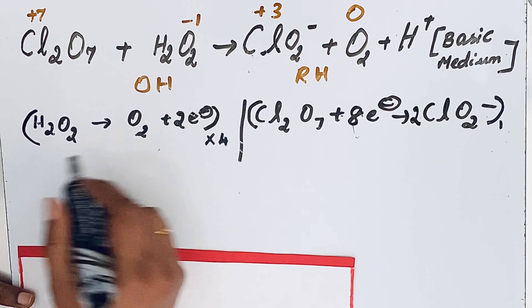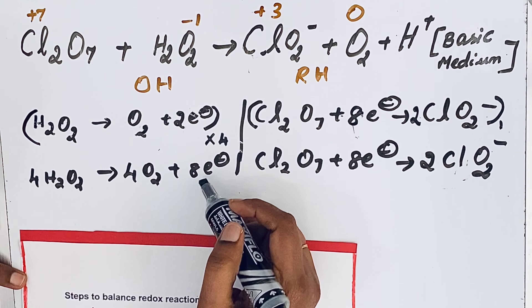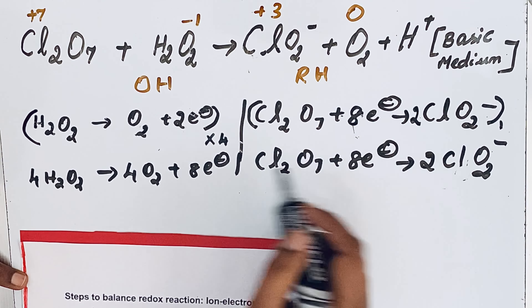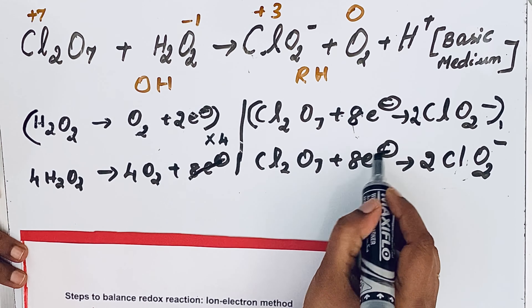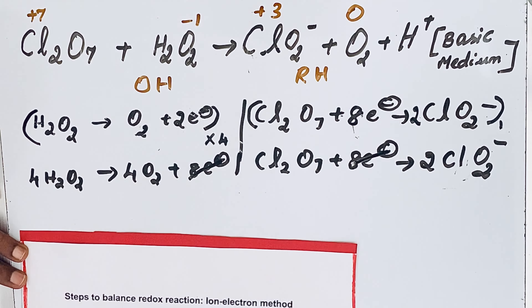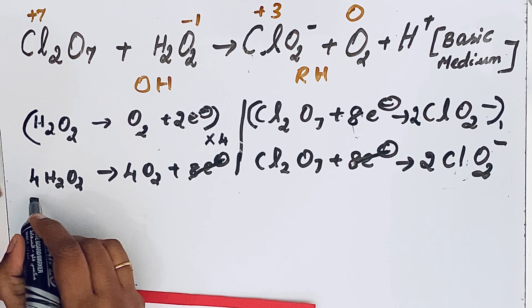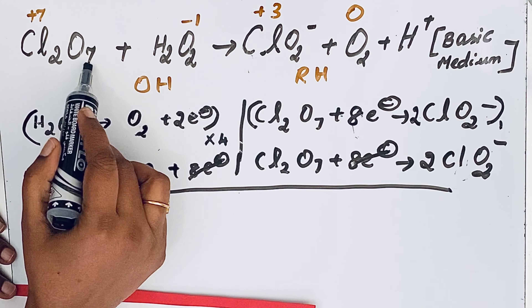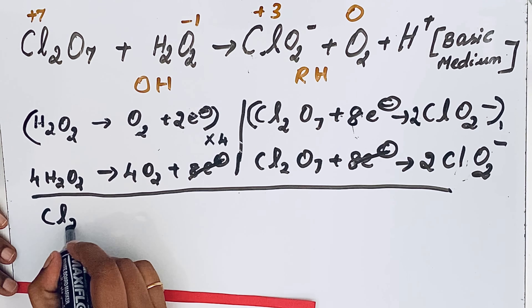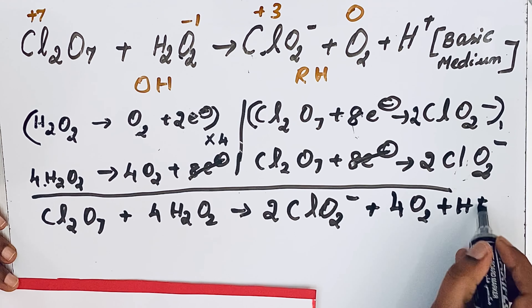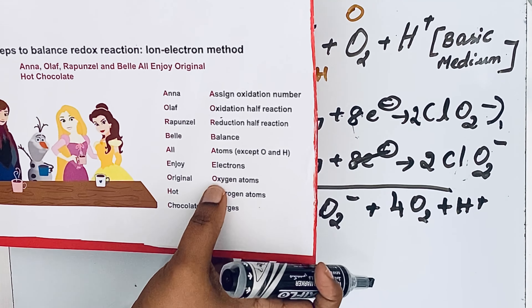So H₂O₂ is multiplied by four. The electrons on both sides are now equal, so we can cancel the electrons. Once this step is over, we rewrite the combined reaction. For Cl₂O₇ there is no change in its coefficient.